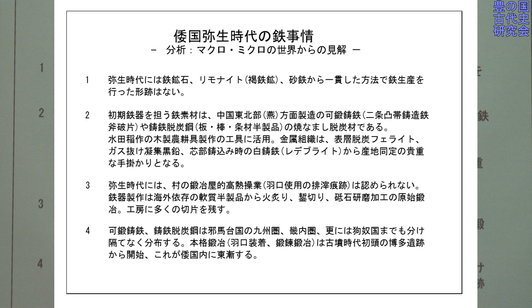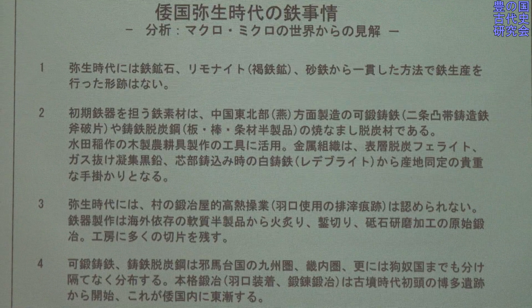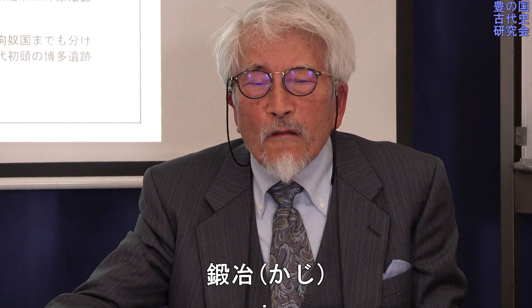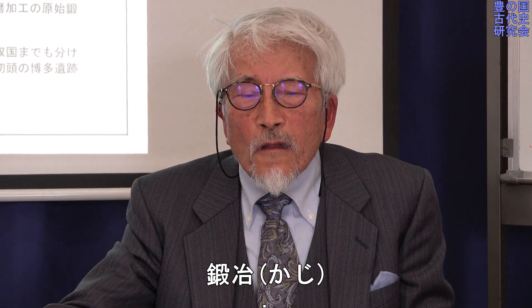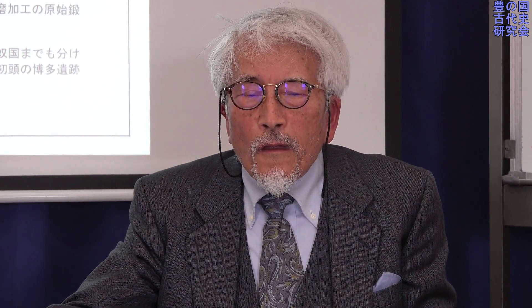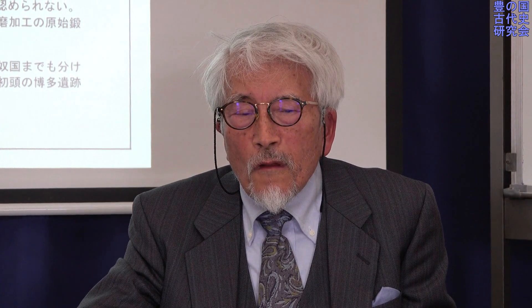この和国の弥生時代の鉄というのは、中国大陸の河北省あたりを中心とした縁の国から搬入されたものであって、それも幾種類かあるということを組織でもって説明していきたいと思います。弥生時代は製鉄はなく鍛冶です。鉄器加工の世界なんですが、材質的には柔らかい鉄が使われておりまして、タガネで切り砥石で研いでといった原始鍛冶の趣が強いところであります。